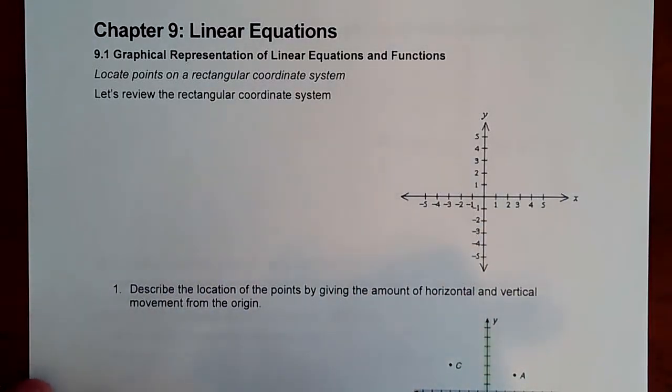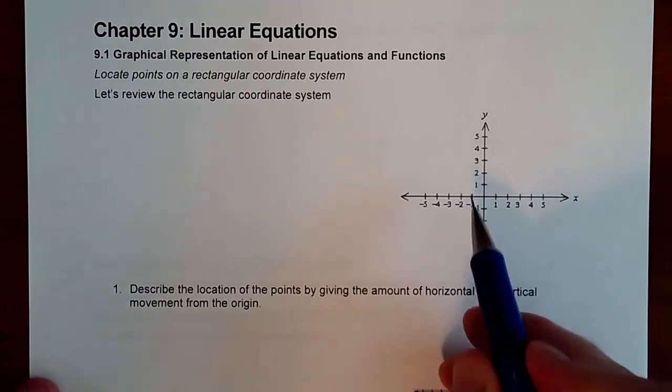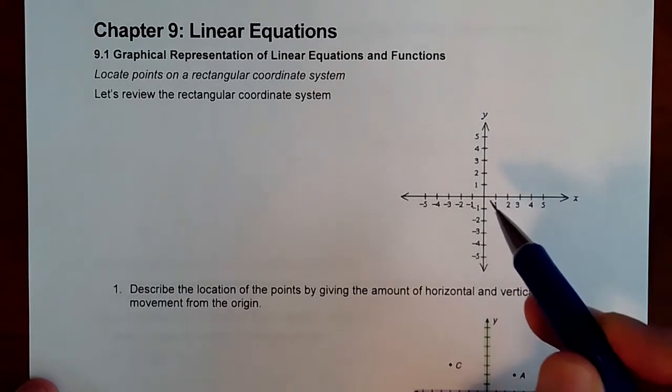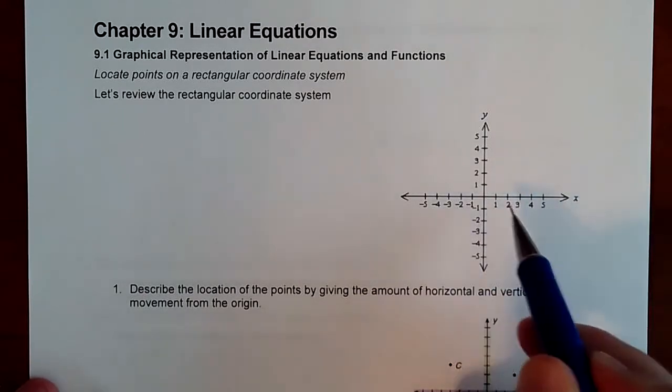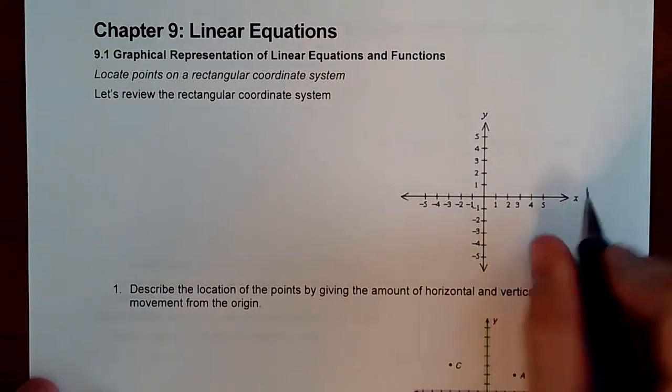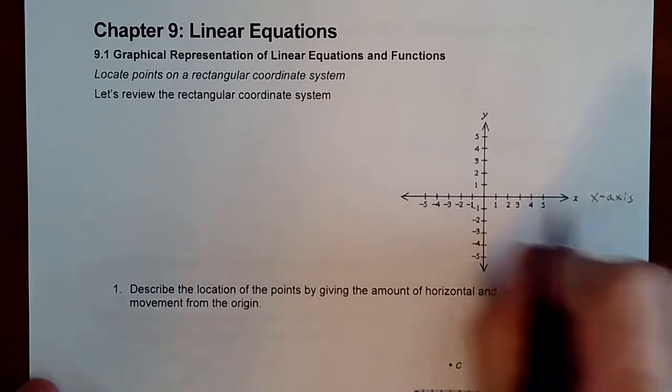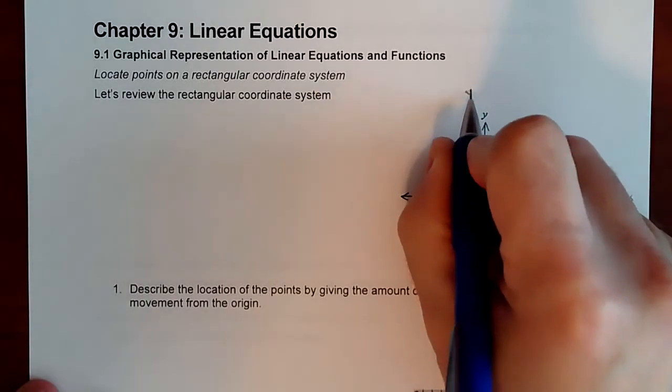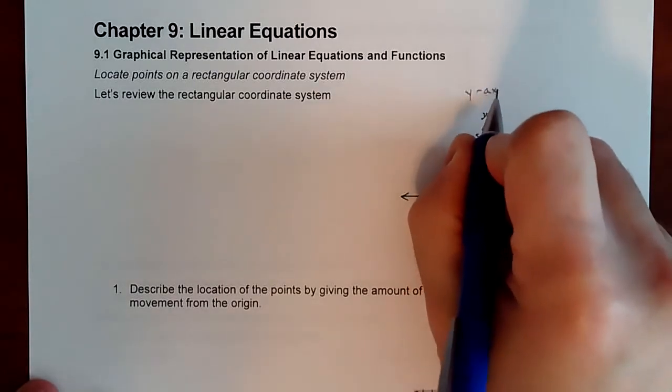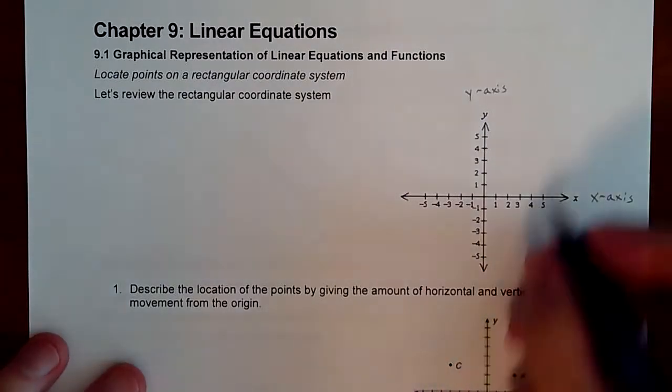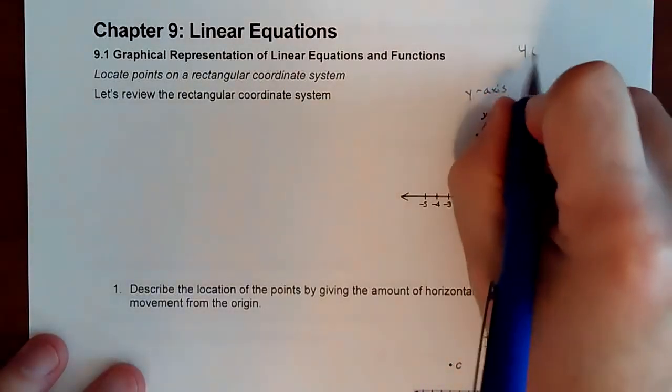First thing is basically you're connecting two number lines when you connect this grid here. We have a horizontal axis, which is the x-axis, and we have a vertical axis, known as the y-axis, and that makes four different sections known as quadrants.